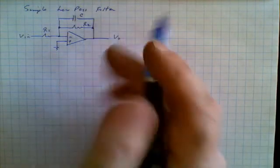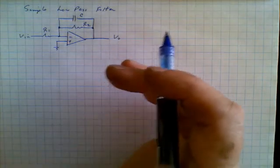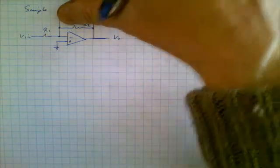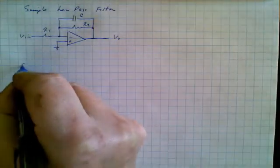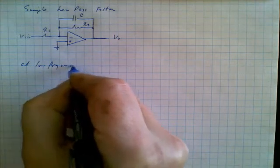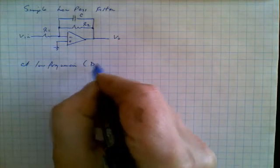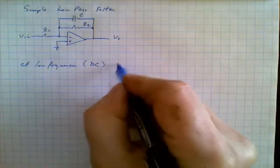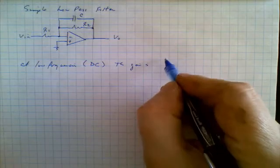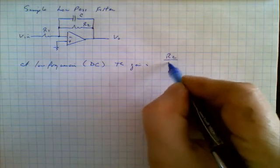Well, if we take a look at first of all the very low frequencies, at very low frequencies the capacitor is basically not there and we can remove it. So we can say at low frequencies, an example that would be DC, the gain is going to be R2 over R1.